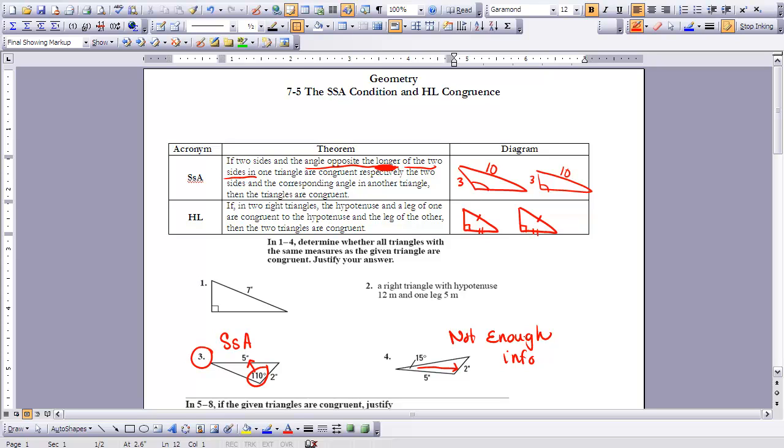Let's take a look up here. We have a hypotenuse given to us, and we have a right angle, but that's all we have. We need a leg. We need the leg in order to be able to state that the HL congruence theorem is at work here. So this also is not enough information. I'll just write N-E-I on that one.